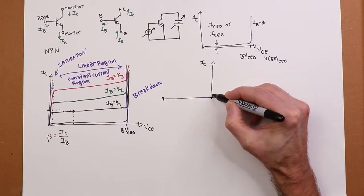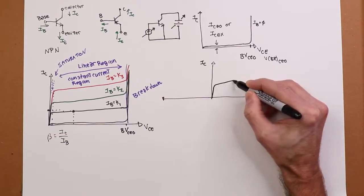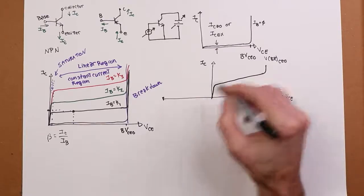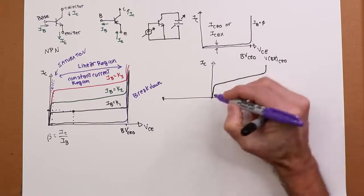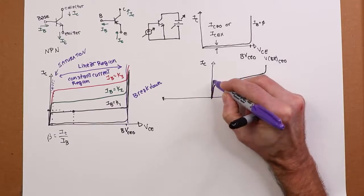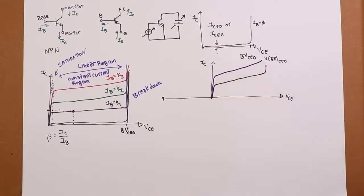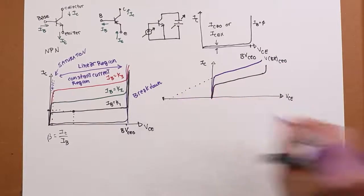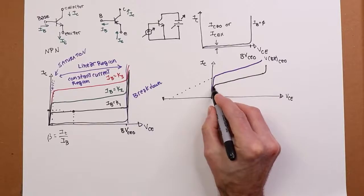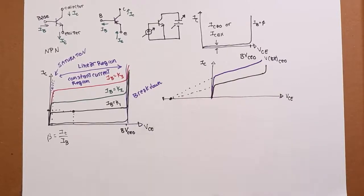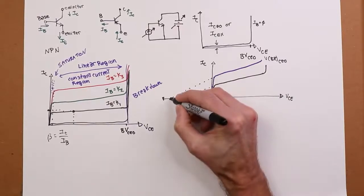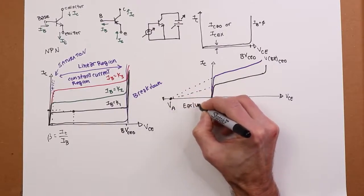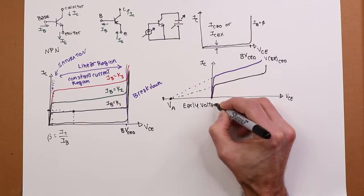If I'm going to sort of zoom in on this, I'm going to exaggerate it even more. If I took a look at one of these curves, it's going to come up saturation. Here's my linear operation region. There's my breakdown. Now, if I took a second curve and did the same thing, now I followed these back. These lines will, in fact, intersect. This point is called the early voltage.